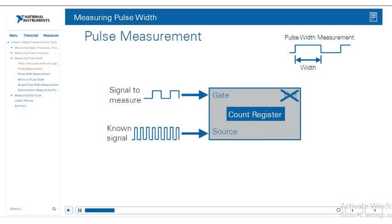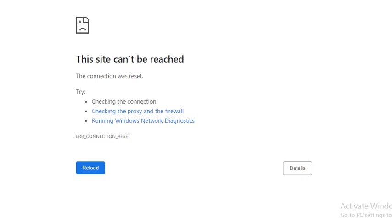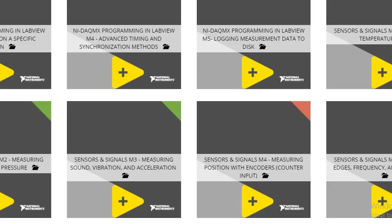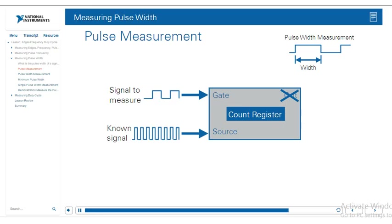To use a counter to measure pulse width, we're going to use the gate, the source, and the count register of the counter. We'll place the signal we want to measure at the gate input, and the source will be a time base of known frequency. We can then use that known frequency of our time base and the value of our count register to measure the pulse width.